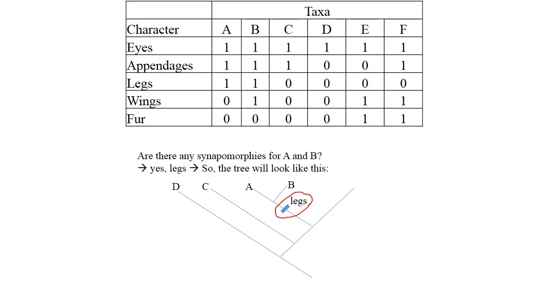The next question is what's the closest taxon to B? The answer is F and the same question. Are there any synapomorphies for F and B? The answer is no. So F goes on the tree like that and the last empty spot on the tree is occupied by the last taxon that we haven't included on the tree already, which is E.